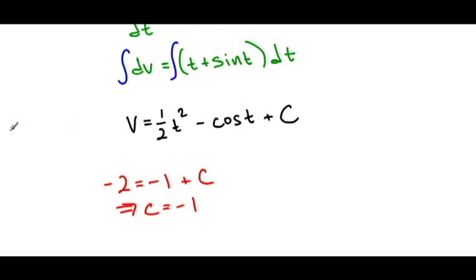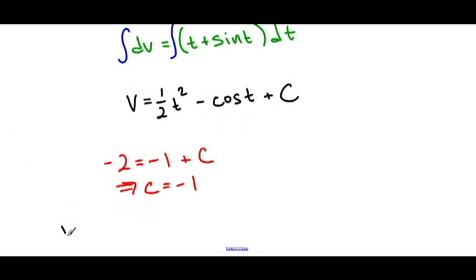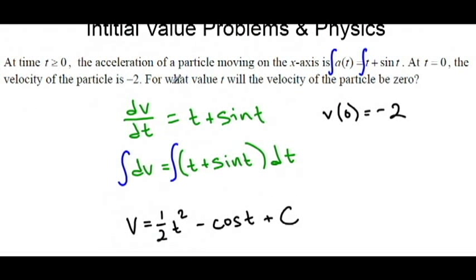So our particular velocity function, v(t), is (1/2)t² - cos(t) - 1. Now, let's go back and read the problem. They are asking us for what value of t the velocity is going to be zero.